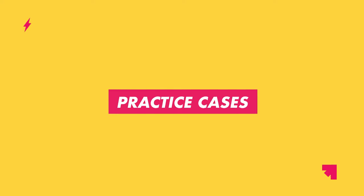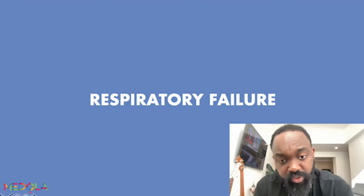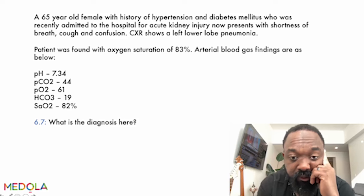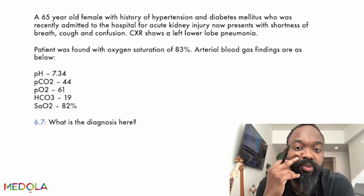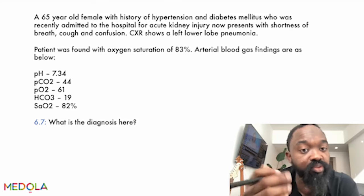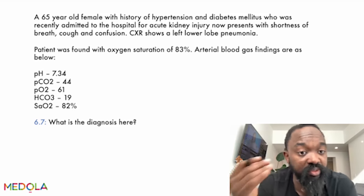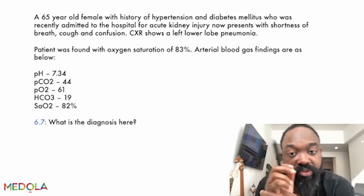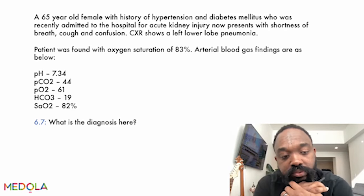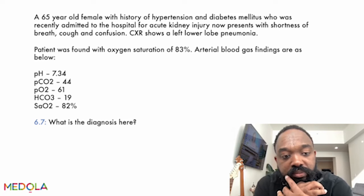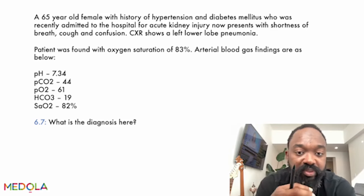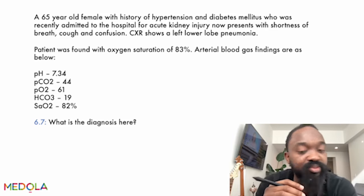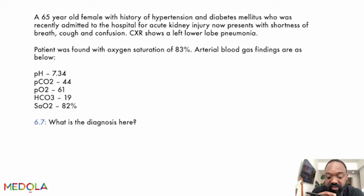Now we'll apply what we've learned to case scenarios. Case 1: A 65-year-old female with hypertension and diabetes, recently admitted for acute kidney injury, now presents with shortness of breath, cough, and confusion. Chest X-ray shows left lower lobe pneumonia. Oxygen saturation is 83%. ABG shows pH 7.34, PCO2 44, PO2 61, bicarb 19, and O2 saturation 82%. What is the diagnosis?